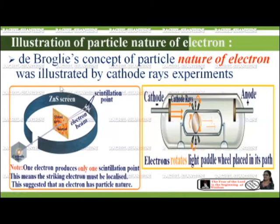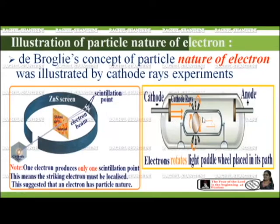The particle nature of the electron was illustrated by the cathode ray experiment discussed in session 2.1. When an electron strikes a screen coated with zinc sulfide, it produces a spot of light called scintillation. One electron produces only one scintillation point, meaning the electron must be localized and not spread out like waves — it behaves like a particle. This is also demonstrated by another cathode ray experiment where a stream of electrons rotates a paddle wheel placed in its path.